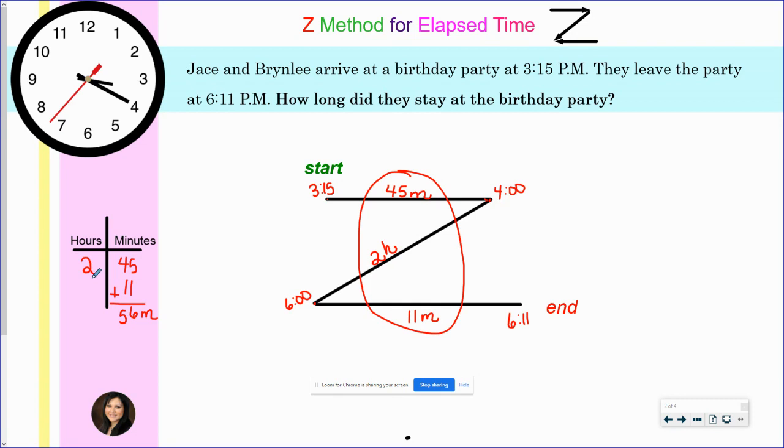So here I have no more hours to add. So I have two hours and 56 minutes. Go back to my question: How long did they stay at the birthday party? Two hours and 56 minutes.